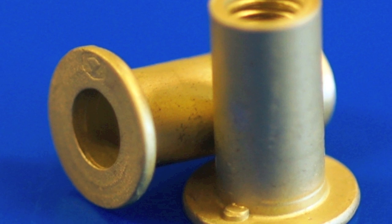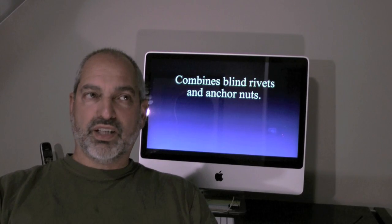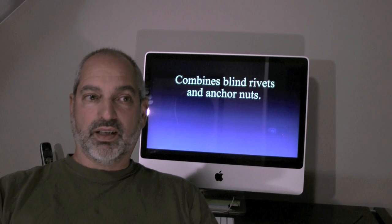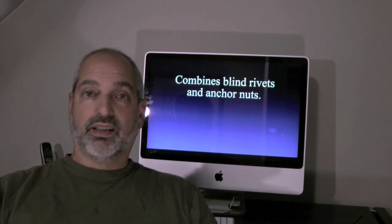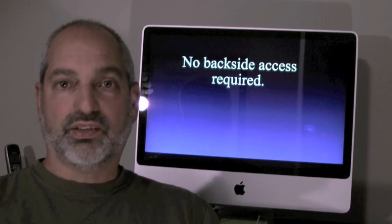What are rivnuts? Rivnuts are a combination of a rivet and an anchor nut, and they accept commonly threaded aviation hardware. Rivnuts are a blind fastener and no back side access is required.